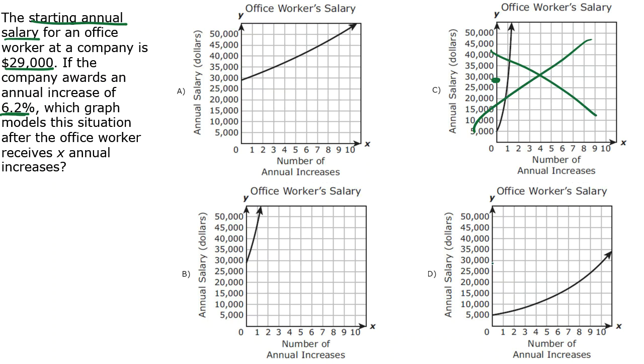D also does not start at $29,000, so it can't be D either. Looks like B starts right about $29,000, and so does A. So I've got it down to two answer choices, either A or B.